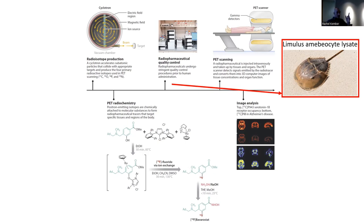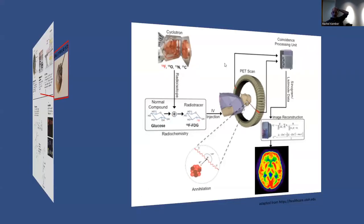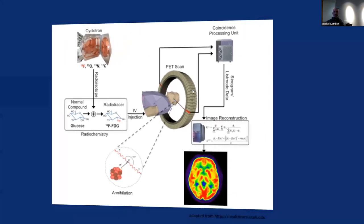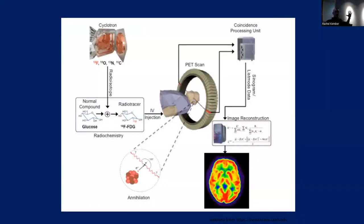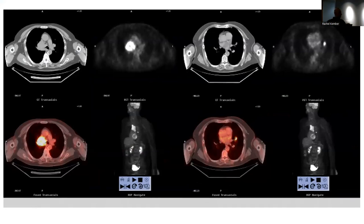After all those steps — making the radioactive particle into a drug, ensuring it's safe — we inject it, scan the person, then analyze the pictures. The PET detector is a ring. The positron immediately annihilates and produces two photons moving in directly opposite directions — that's what the machine detects. Our most common tracer is fluorodeoxyglucose (FDG), a glucose analog. In the clinic, I look at patients with cancer because different types of cancer use a lot of glucose.